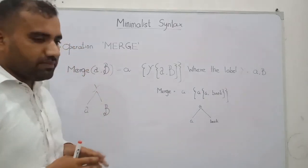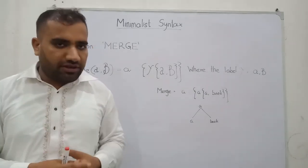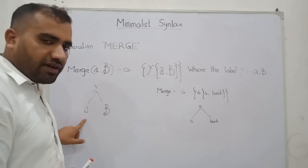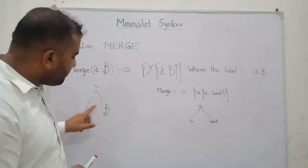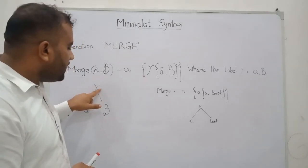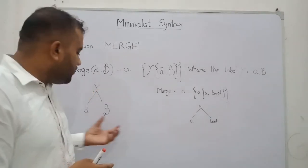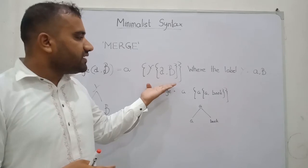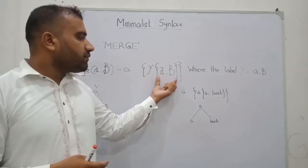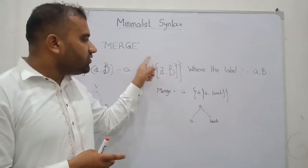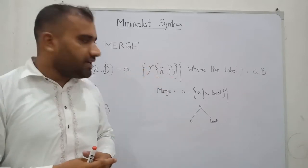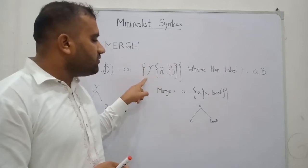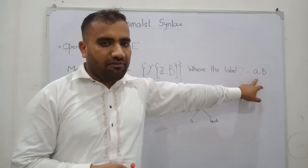Suppose alpha and beta — these are the two distinct linguistic categories. If alpha merges with beta, it will become the label of these two categories, that is lambda. In bracket form, this bracket shows that alpha and beta merge, and then lambda is the label of these two linguistic categories. Lambda is the label of alpha and beta.